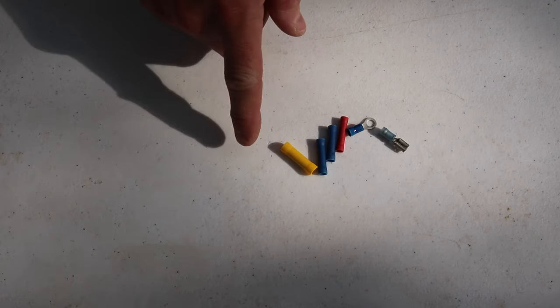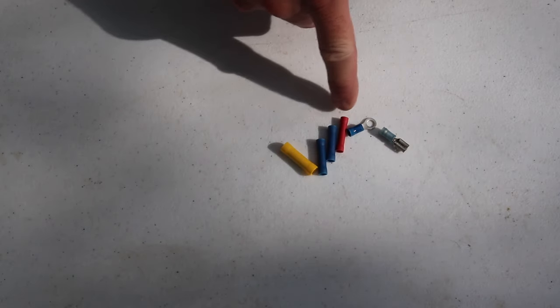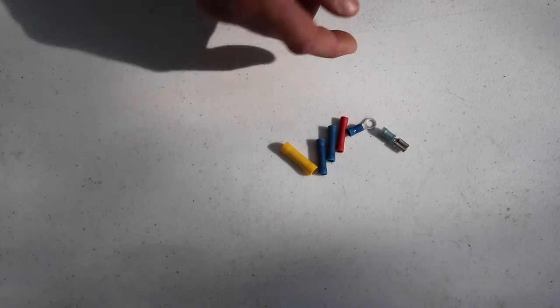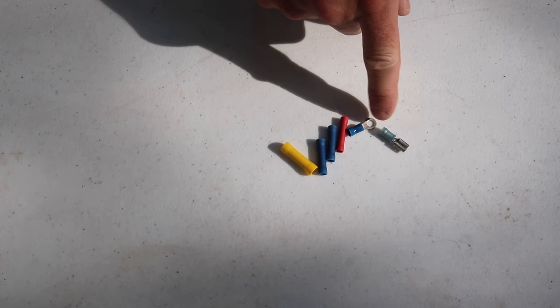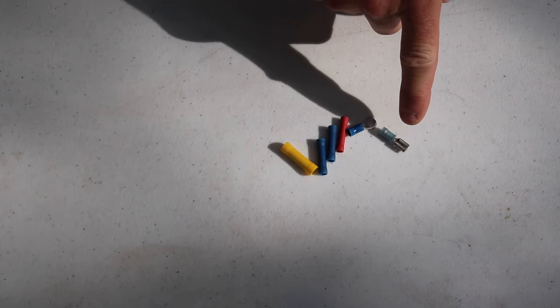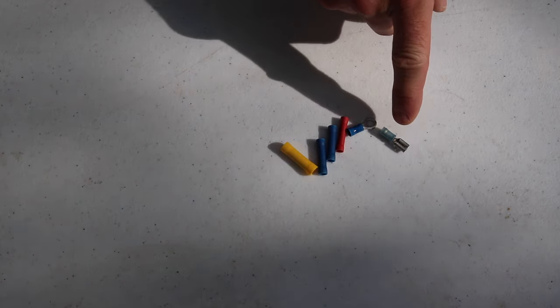Lastly you're going to need some connectors. We have a few connectors here for joining two ends of wires together, and then we have a ring connector for going over a screw and a spade connector for going on to a spade terminal.